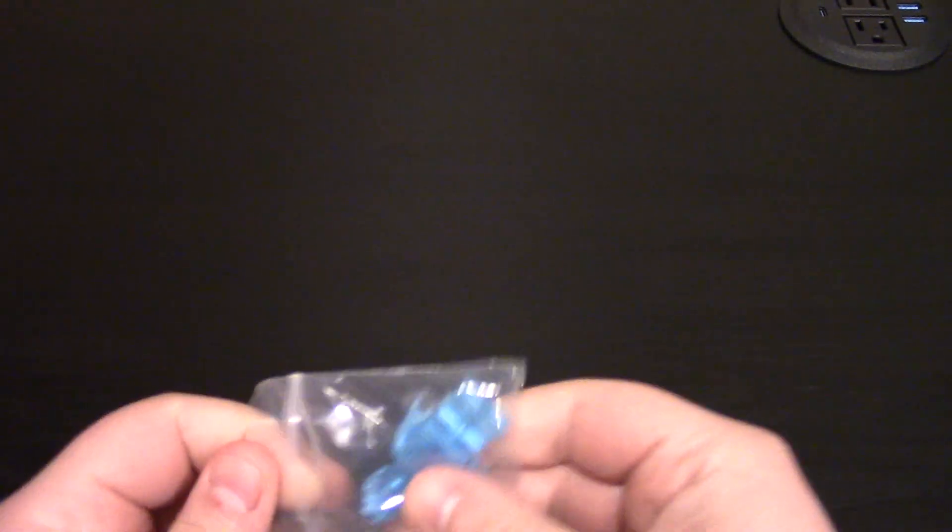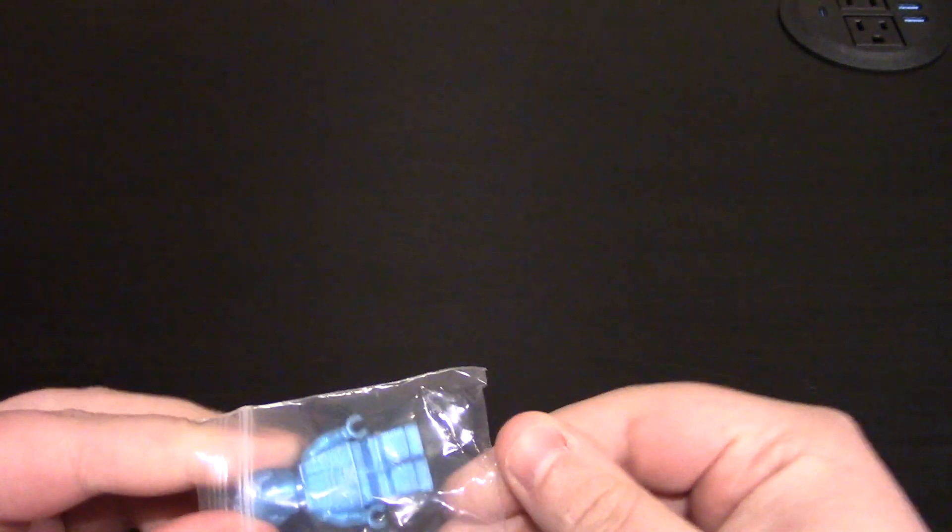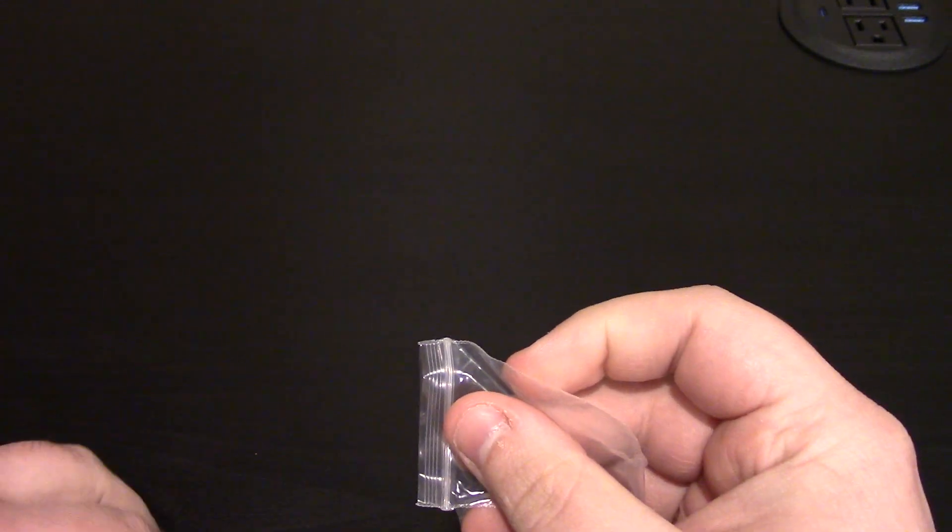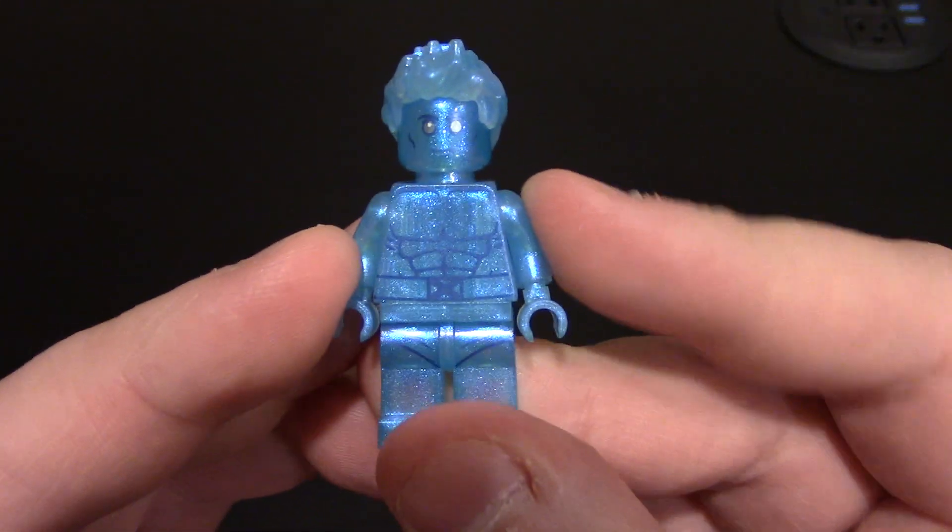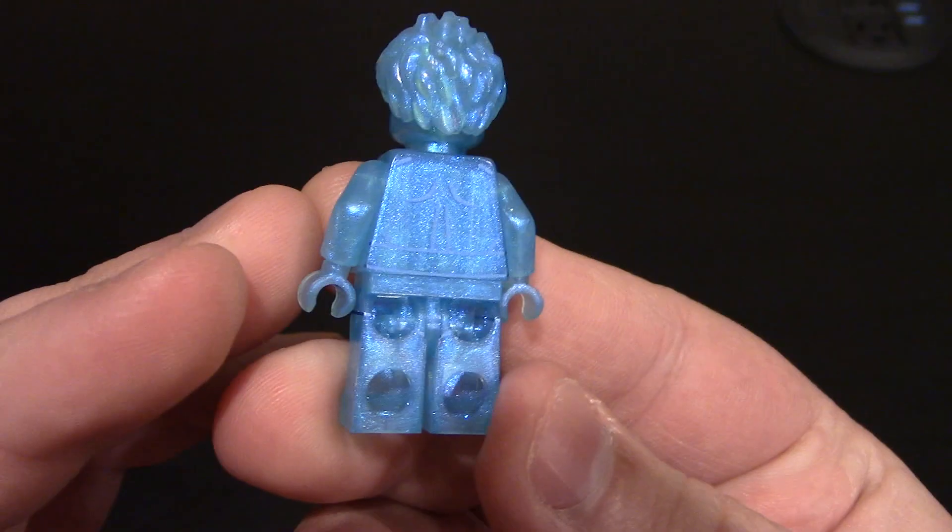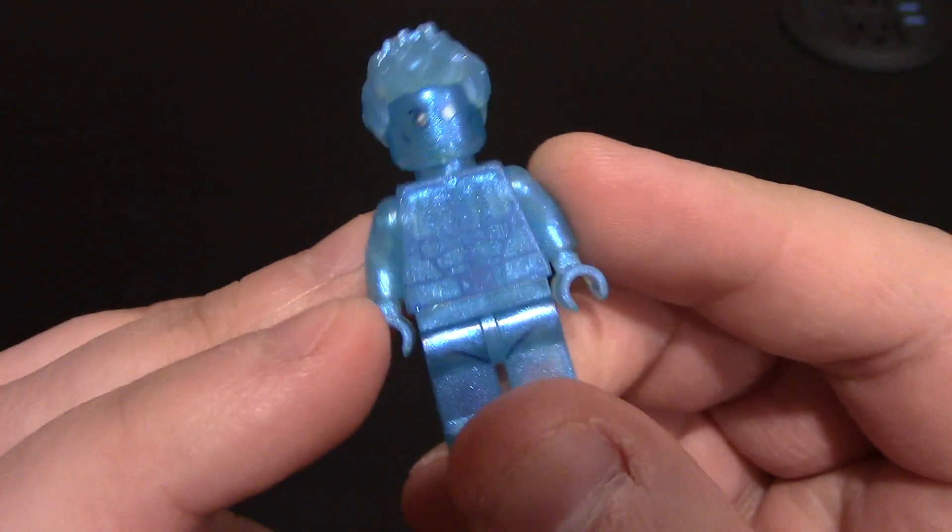And again, it's a lot of parts. Now on to the minifigure himself. He does come in a little baggie. And out. Super excited. A whole different style to this one. And like I said, he comes with two faces, two hair pieces. Get him out. And here he is. Very shiny blue. Transparent. Looks amazing.